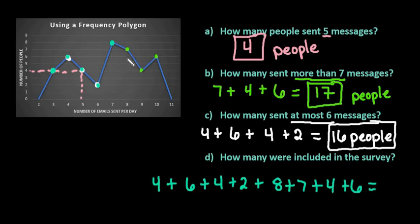So you could do this without showing out all the work but I just wanted to show you that we're basically adding all the frequencies, all of these values here, and we just add them together and we get a total of 41. So 41 people were surveyed.